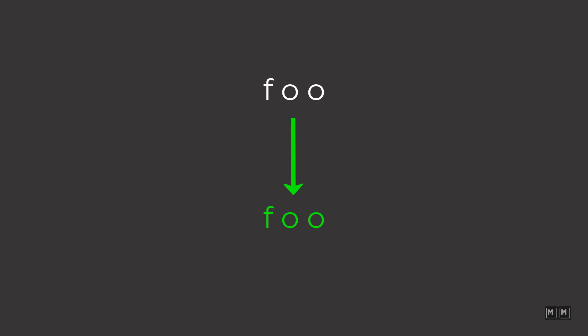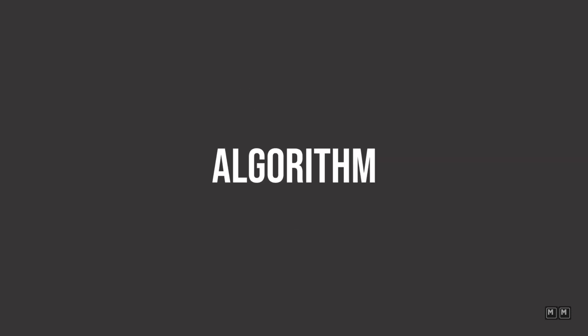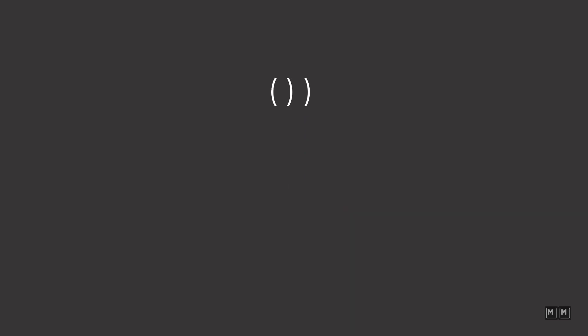Another example input could have no parentheses at all, so the final result would just be the input string itself. This is a pretty easy problem to understand, but the algorithm is a bit more difficult. What we need to do is identify which parentheses, if any, are invalid. To identify these invalid parentheses, we will be using a stack.